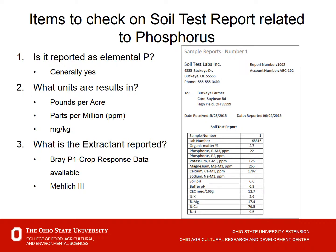The third item we want to check is what extractant is being reported. The extractant is the liquid that we mix with the soil that is sent into the lab, and it is read for the amount of phosphorus in that solution. We have two common extractants used here in Ohio: one is Bray P1 and the other is Mehlich 3. Both do a great job of evaluating the amount of crop-available nutrient in the soil, but they are different numbers — they do not come up with equal values because of the differences in the two extractants. We just need to understand which one is being reported on the form coming back from the lab.